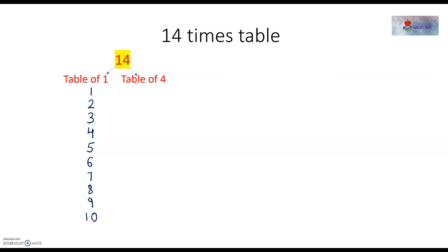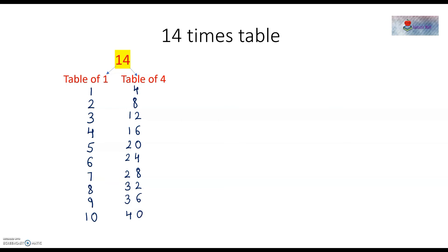And then we will write the table of 4. So, 4 1's are 4, 4 2's are 8, 4 3's are 12, 4 4's are 16, 4 5's are 20, 4 6's are 24, 4 7's are 28, 4 8's are 32, 4 9's are 36, 4 10's are 40. And then we will add the 10's digit of the 4's table with the table of 1.